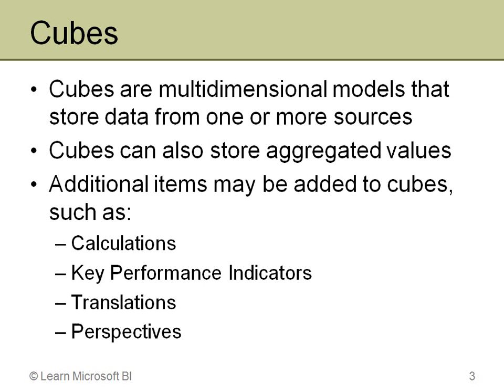One example might be that you have all of your actual data coming into a relational data warehouse, but your budget or forecast may be stored in an Excel spreadsheet. And so you can pull that in so that you can compare your actual versus your target values. So cubes can draw from potentially multiple sources.